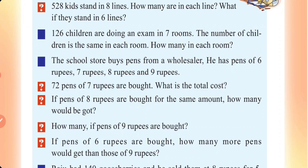126 children are doing an exam in 7 rooms. The number of children is the same in each room. How many children are in each room?